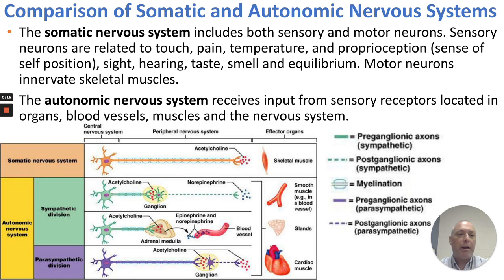Let's compare the somatic and the autonomic nervous system. The somatic nervous system includes both sensory and motor neurons. The sensory are related to pain, touch, temperature, proprioception — which is a sense of self-position, like in your joints — sight, hearing, taste, smell, and equilibrium. The motor neurons innervate skeletal muscles.